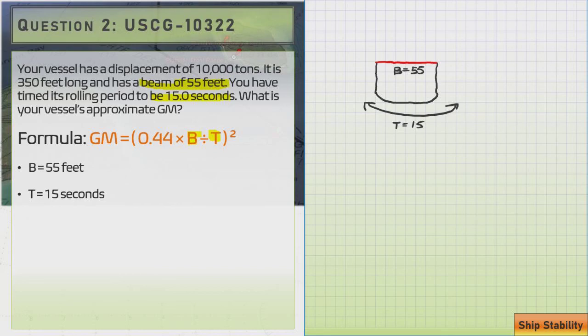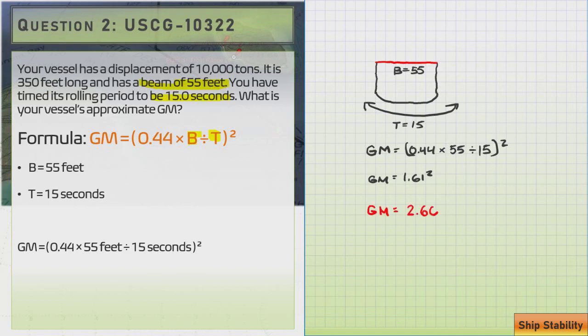And our full formula is going to look like this: we got 0.44 times 55 divided by 15 all squared. Simplify that to 1.61 squared and then our final answer being 2.60 feet. So as you can see with these two examples, the formula is pretty much all there is to it. You just got to plug in the two variables and you're ready to go.